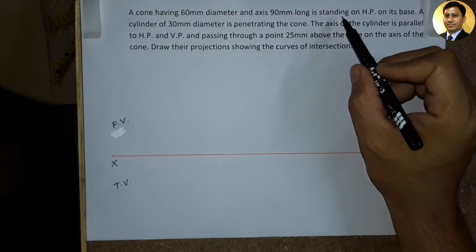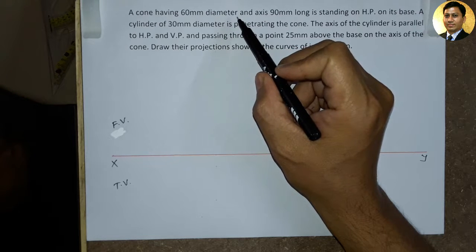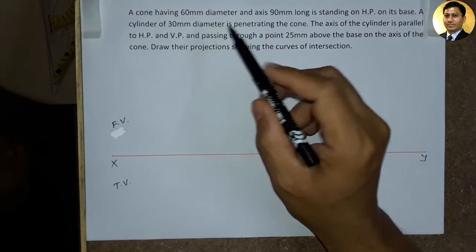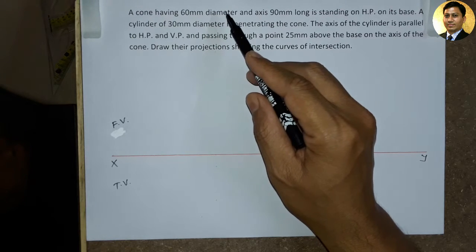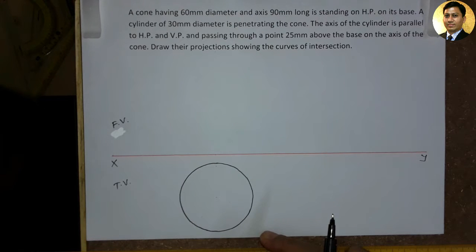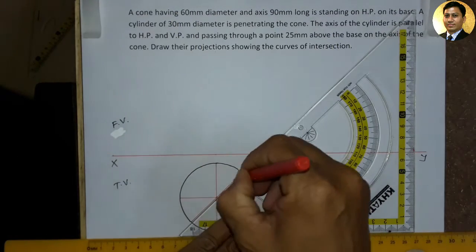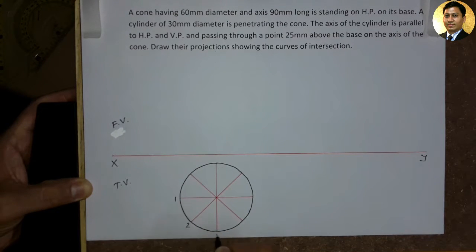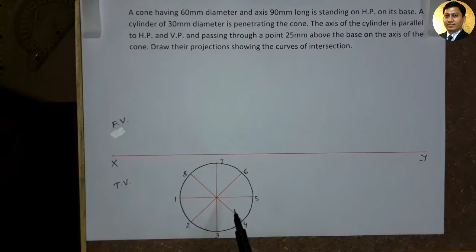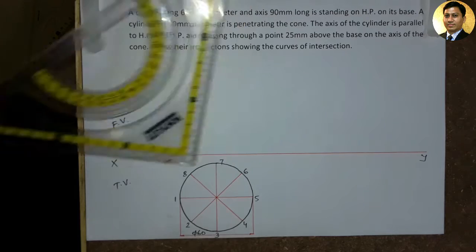Agar hum is cone ka top view dekhein, to top view mein hume ek 60 mm diameter ka circle nazar aayega. Aur agar hum cone ka front view dekhein, to front view mein hume ek 60 by 90 mm size ka triangle nazar aayega. Is problem ki shuruwaat hum 60 mm diameter ka circle draw karke karenge, yoh ki hum top view mein draw karenge. Ab hum is circle ke 45 degree ke angle se 8 equal division karenge, aur mark karenge points 1, 2, 3, 4, 5, 6, 7, aur 8. Is circle ka diameter hai 60 mm. Yeh ho gaya cone ka top view.